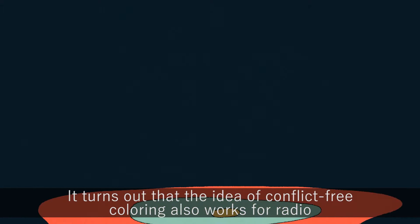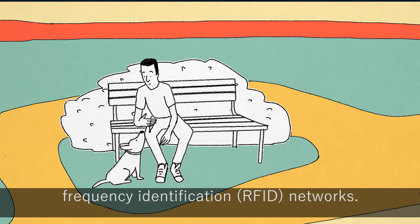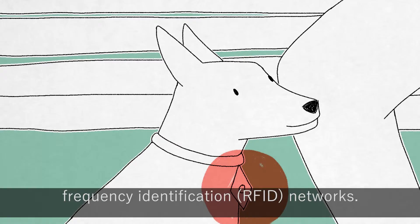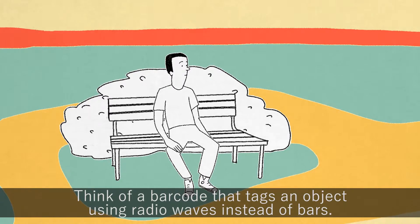It turns out that the idea of conflict-free coloring also works for Radio Frequency Identification networks. Think of a barcode that tags an object using radio waves instead of bars.